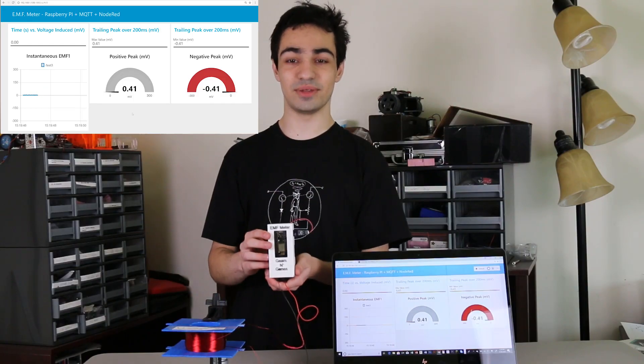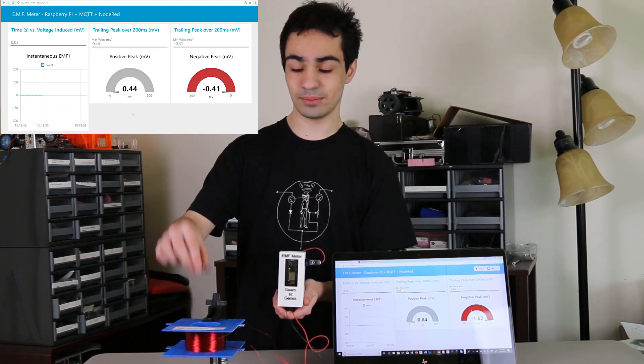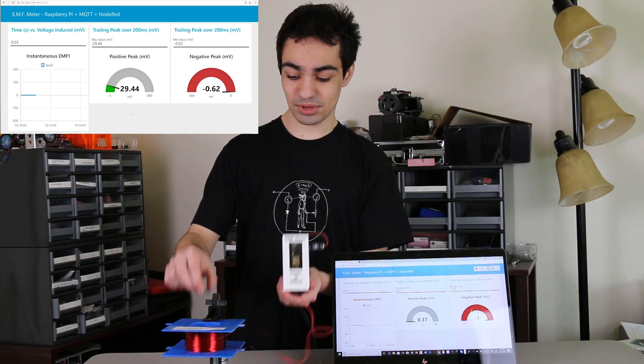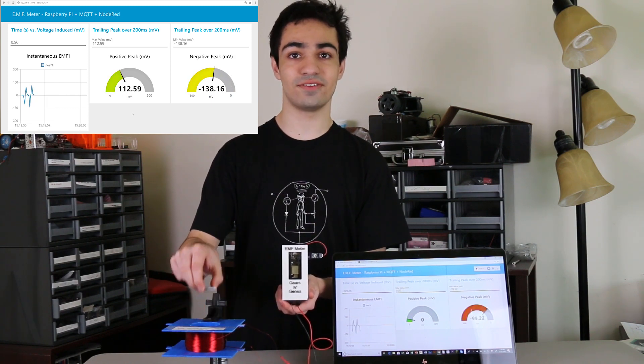Introducing the EMF meter, a device that can measure the voltage induced by a moving magnet to 0.01 millivolts and can publish the data to a browser on your local Wi-Fi.